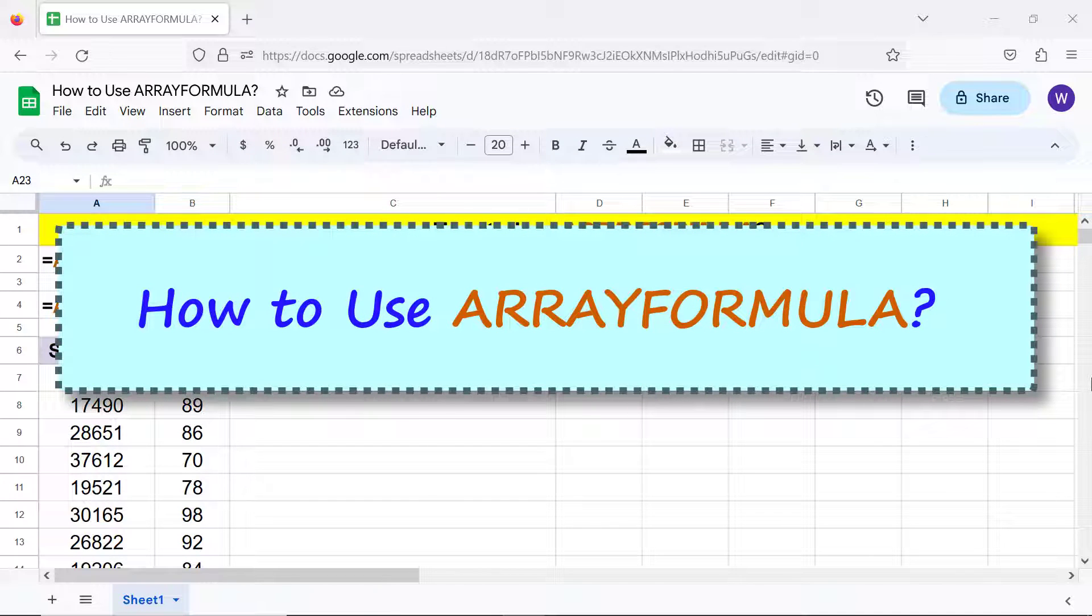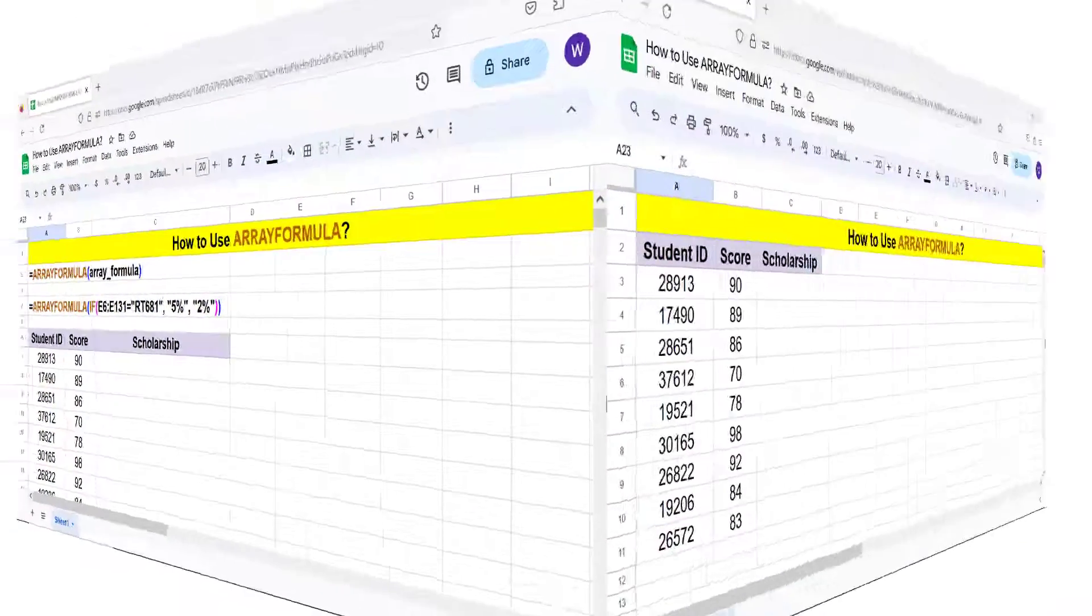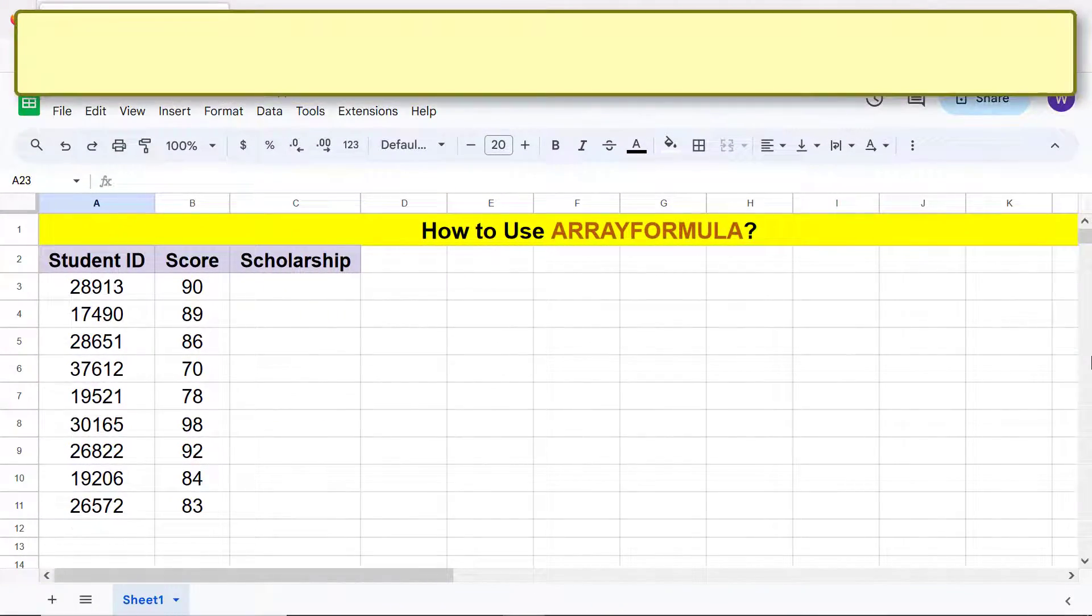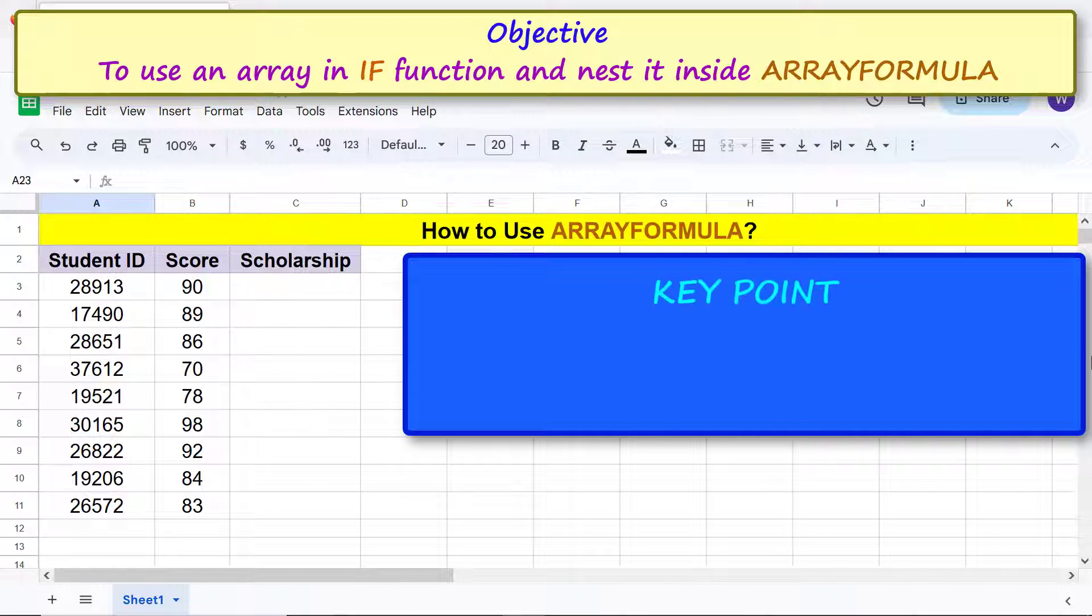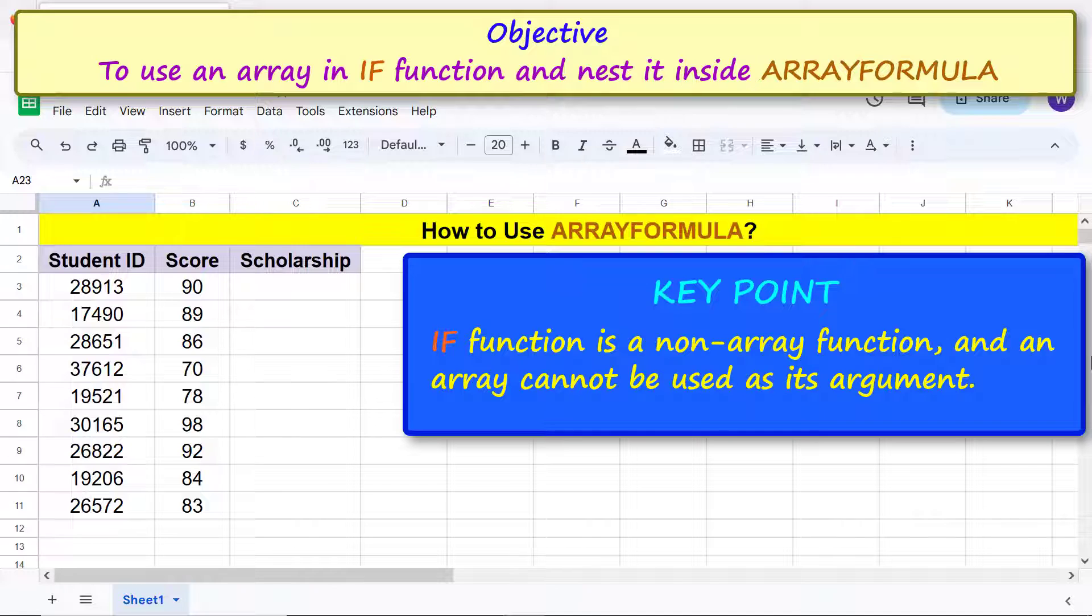How to use Array Formula. Okay, let's get started by first stating the objective of using the Array Formula: to use an array in a function and nest it inside Array Formula. Key point: IF function is a non-array function and an array cannot be used as its argument. Let me demo this point.